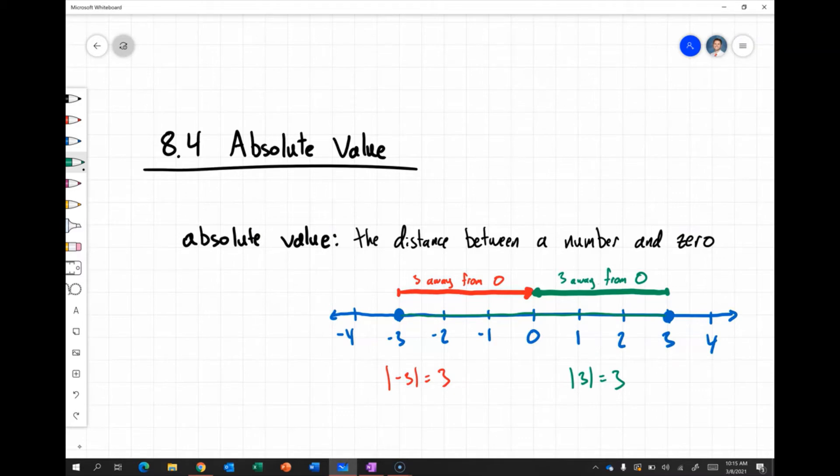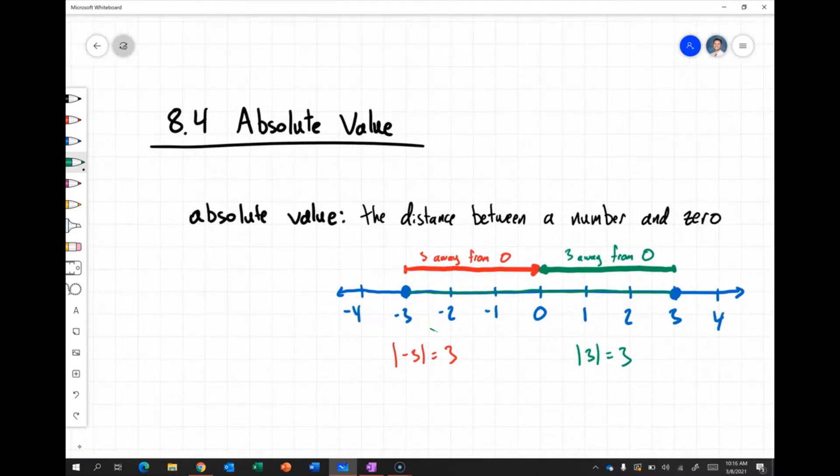So both of these numbers have the same absolute value. The absolute value of negative three, written like this here, is equal to three, and the absolute value of positive three is equal to three.